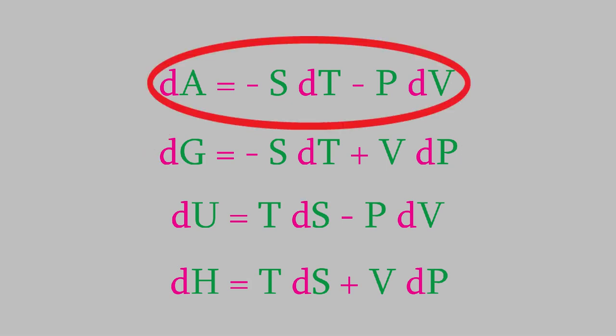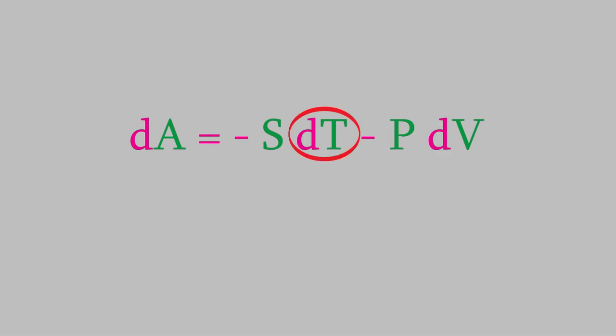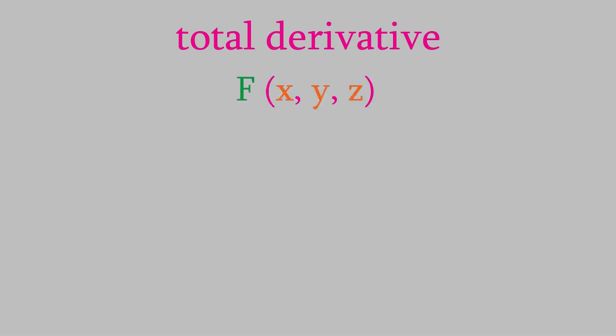Let's look at the equation for the Helmholtz free energy first. Notice that this equation contains dT and dV on the right side. We can use this fact to write a new expression if we use something called a total derivative. That's a mathematical object you might never have encountered before, so let's talk about what a total derivative is for a minute. Suppose we had a function called f that contains three different variables, x, y, and z. We want to know how f varies with respect to another variable, such as t.